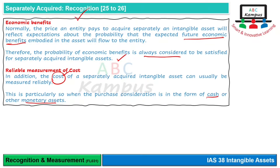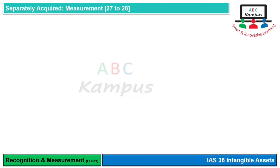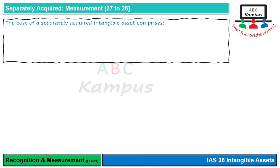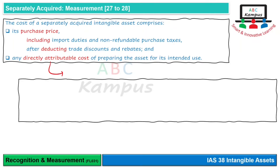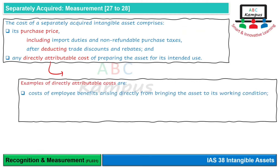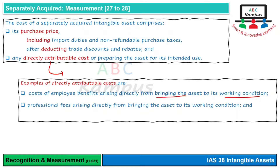For separately acquired intangible assets, the initial measurement is at cost: purchase price including import duties and non-refundable purchase taxes, less any trade discounts and rebates, plus any directly attributable costs necessary to prepare the asset for its intended use. Directly attributable costs include employee salaries and wages needed to bring the asset to working condition, professional fees for consultants, and costs of testing whether the asset is functioning properly — for example, software testing or product technology testing.